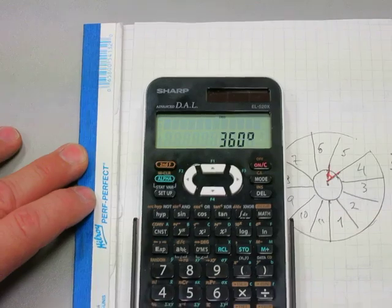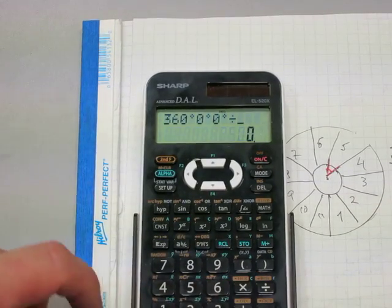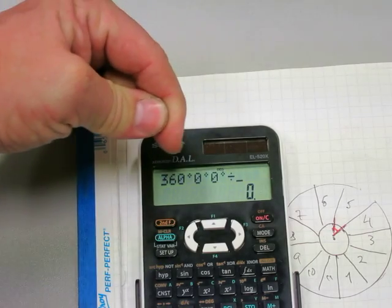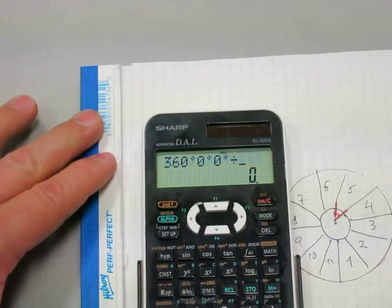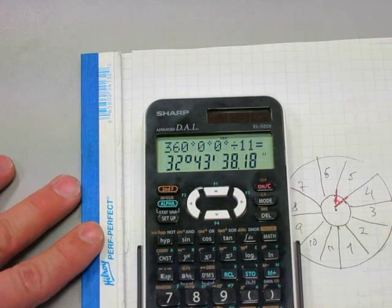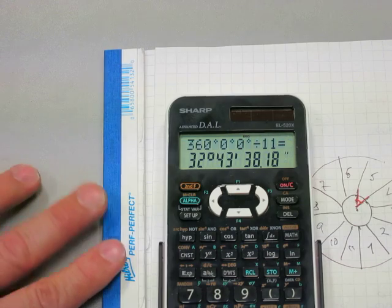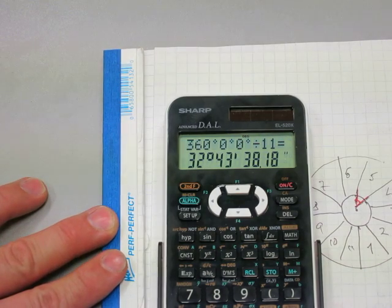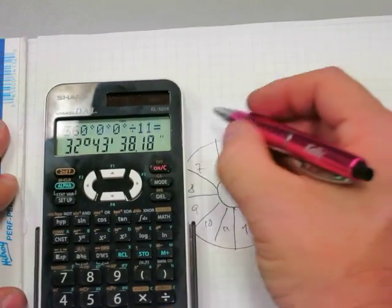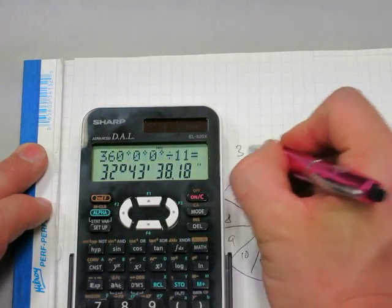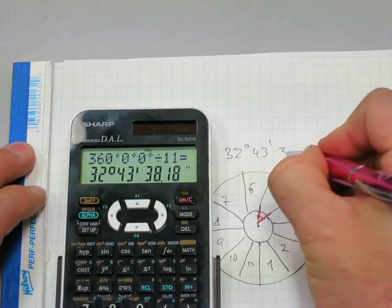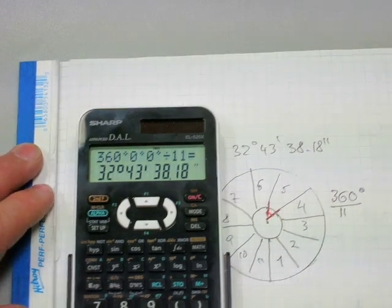Divided by. And the calculator automatically goes. Three hundred and sixty degrees and zero minutes and zero seconds. Divided by eleven. Equals. Thirty-two degrees, forty-three minutes and thirty-eight point eighteen seconds.